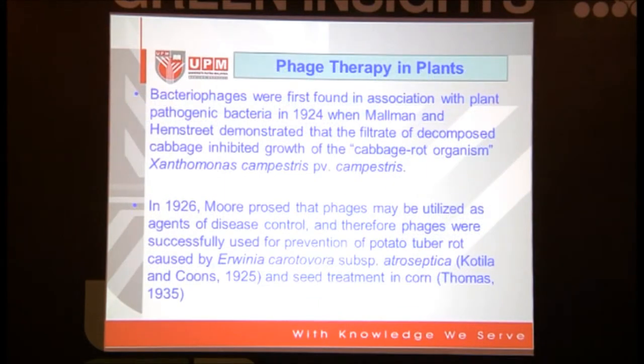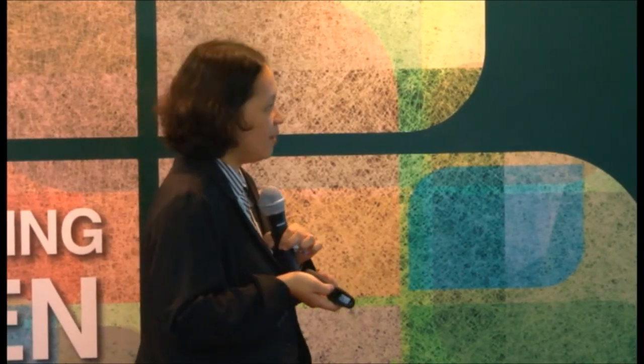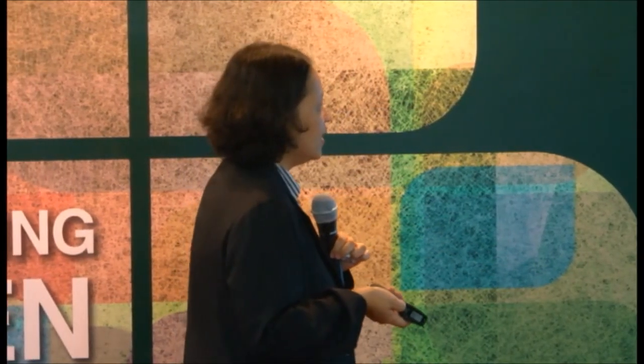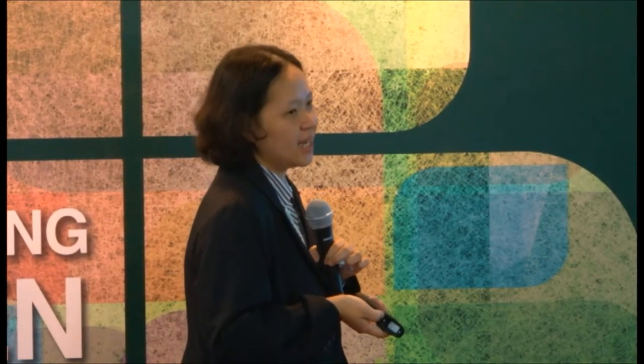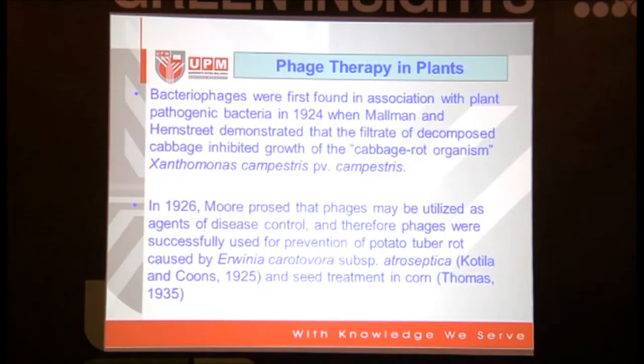It's like a lock and key concept - they are matched to each other. A bacteriophage was first found in plants since 1924, when they found that the filtrate of composted cabbage could inhibit growth of cabbage root organisms. This is how they accidentally discovered phages. In 1924, it was proven that phage may be utilized as an agent for controlling potato tuber rot caused by Erwinia carotovora, and they did seed treatment in corn.